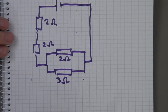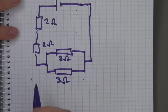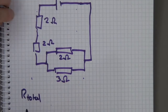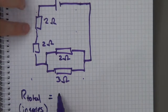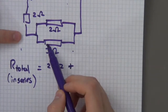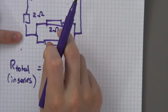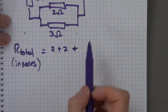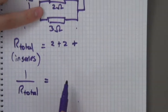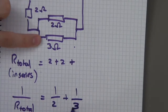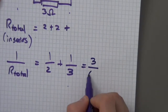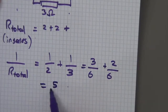In series, R_total = R1 + R2 + ..., so that's two plus two plus the parallel section, which I'll leave blank for now. For the parallel part, I use 1/R_total = 1/R1 + 1/R2, so: one over two plus one over three. The common denominator is six, giving three over six plus two over six, which equals five over six.